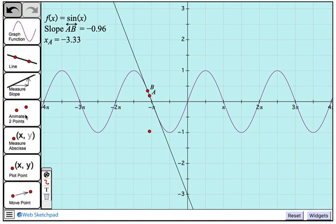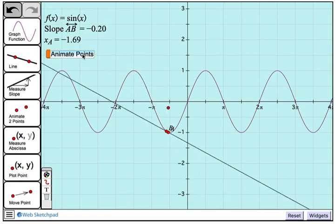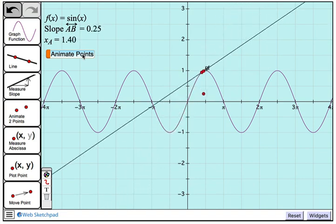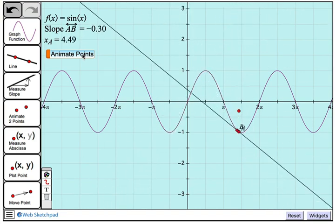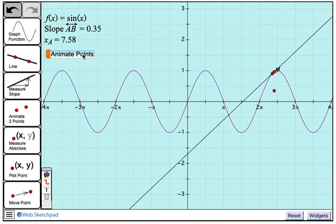I'll tap on animate two points, and I'm going to be animating points A and B so they move along my function. I'll attach this first glowing point to A, and the second glowing point to B. And here we have our animate points button. And if I tap it, we see that it moves our secant line smoothly along f of x equals sine of x.